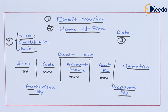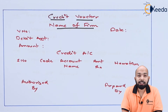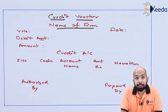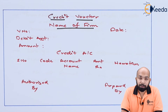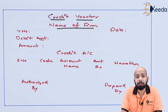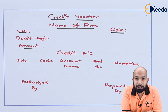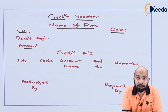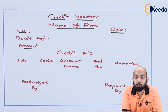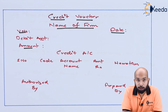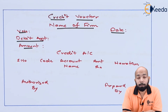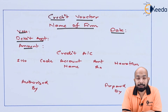The next voucher is the credit voucher. Similar things apply; however, there are certain changes. The name of the firm, date, voucher number, and amount remain the same. The difference is that in a debit voucher we had a credit account on the left-hand side, whereas in the credit voucher we will have a debit account there.